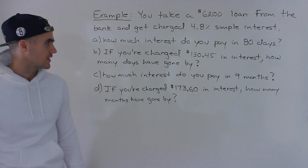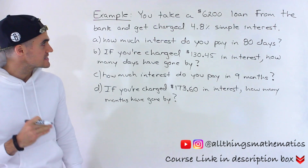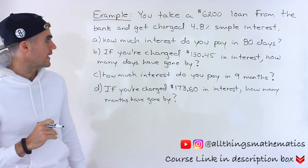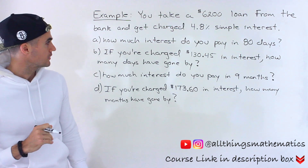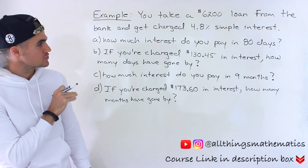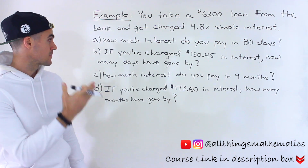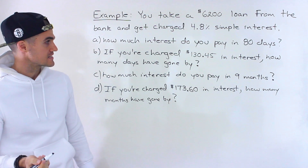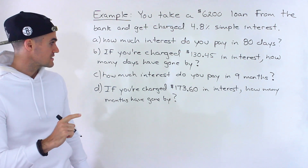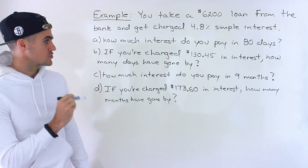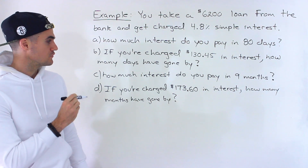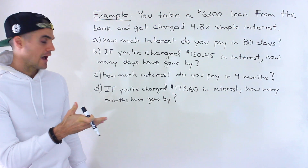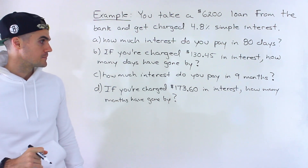What's up everyone, welcome back. Patrick here. In this video we're told that you take out a $6,200 loan from the bank and get charged 4.8% simple interest. Part A: how much interest do you pay in 80 days? Part B: if you're charged $130.45 in interest, how many days have gone by? Part C: how much interest do you pay in nine months? And Part D: if you're charged $173.60 in interest, how many months have gone by?